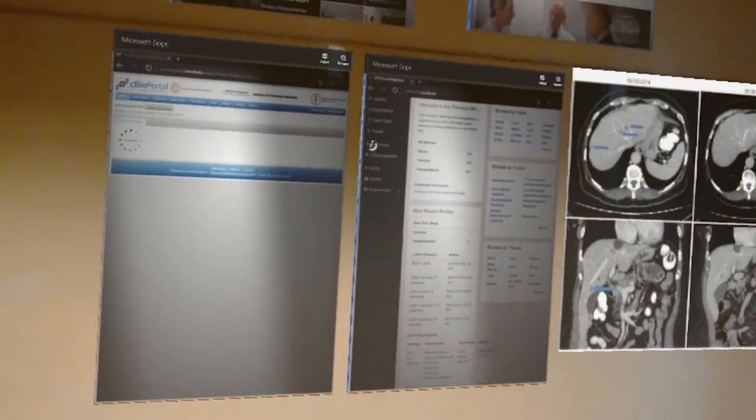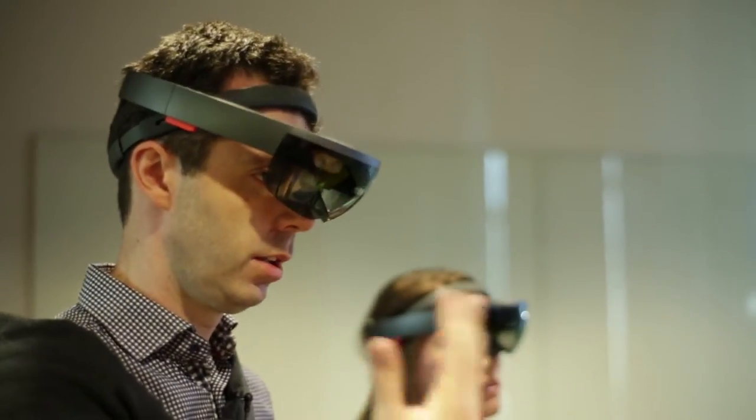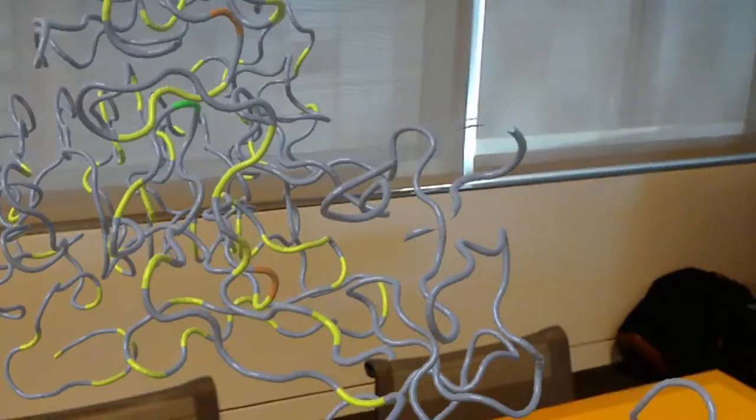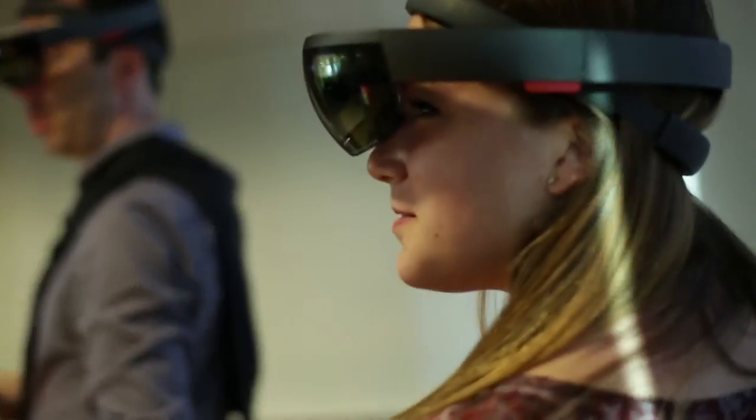The HoloLens is a magical device. It's a device that enables mixed reality. So mixed reality is a concept where you have reality and you can bring virtual objects into reality. For example, protein structures. We've put mutations that we see in patients on top of a structure so that we can see precisely where the mutation is in the structure.